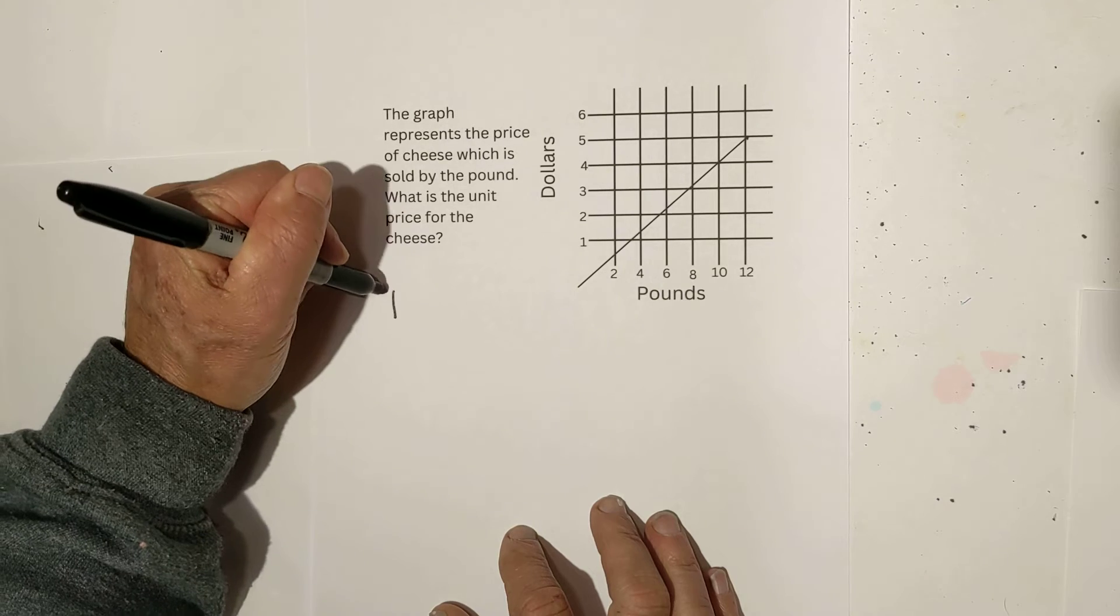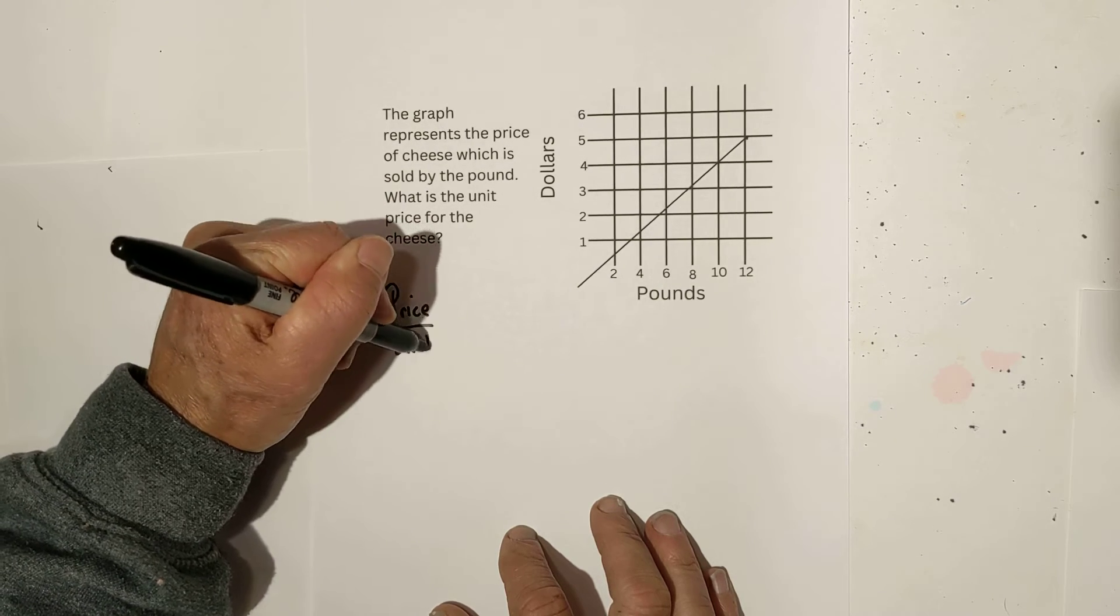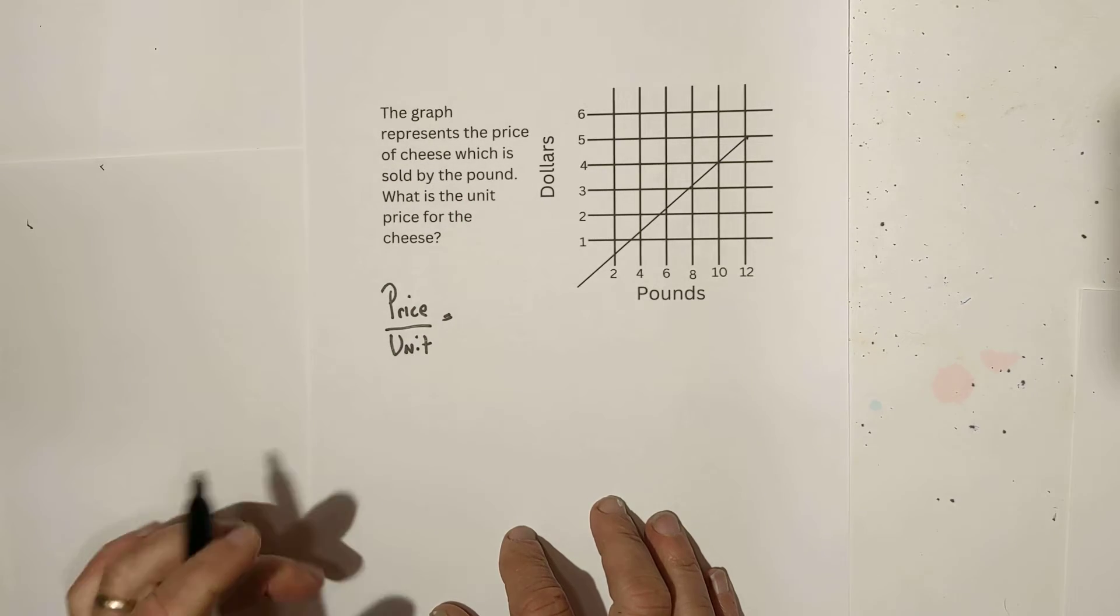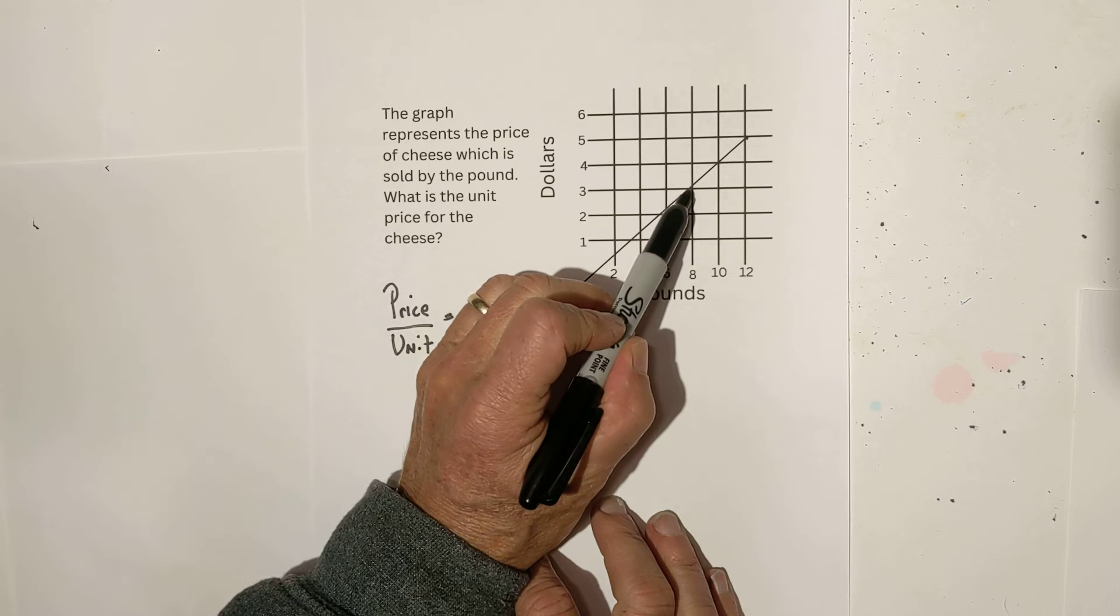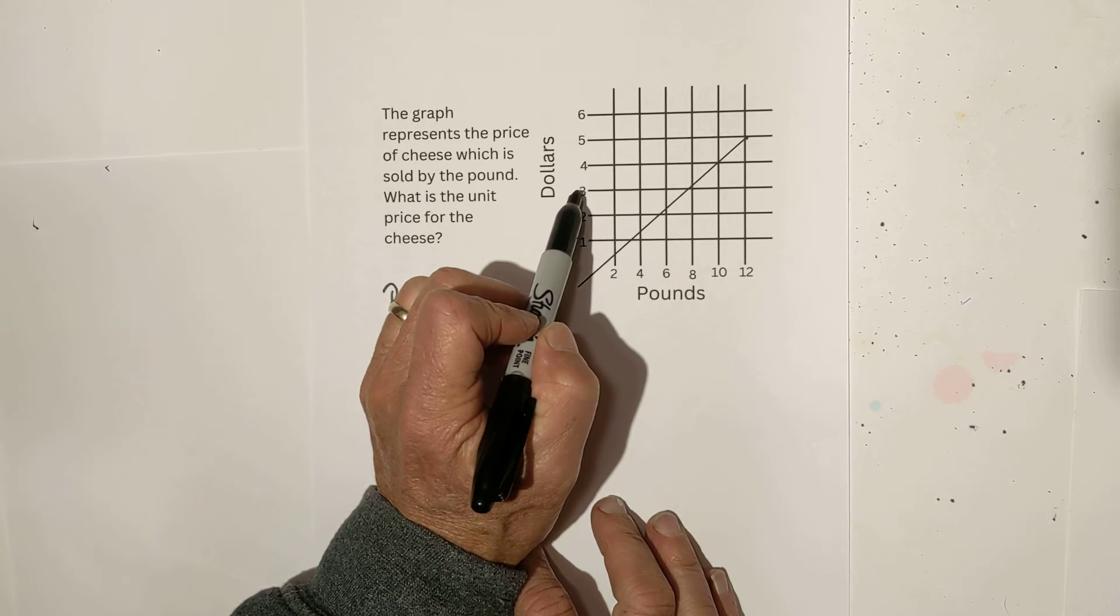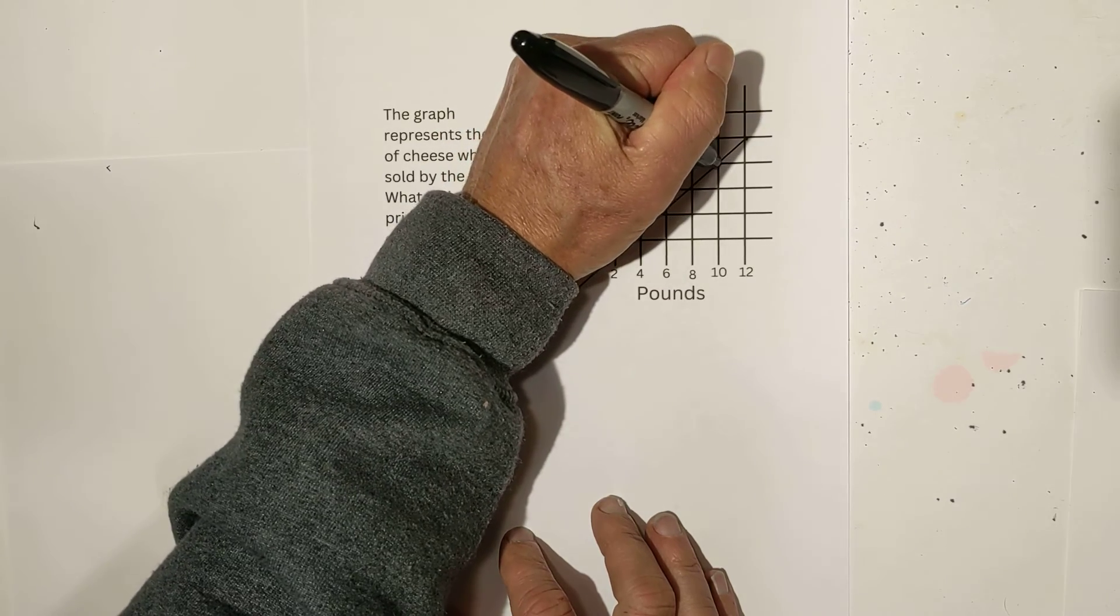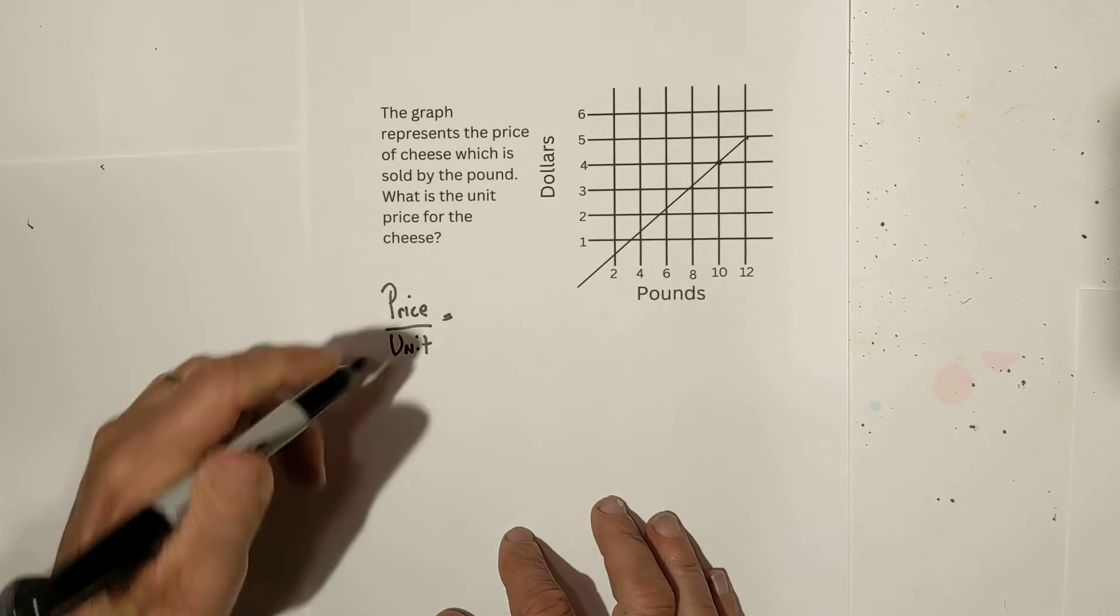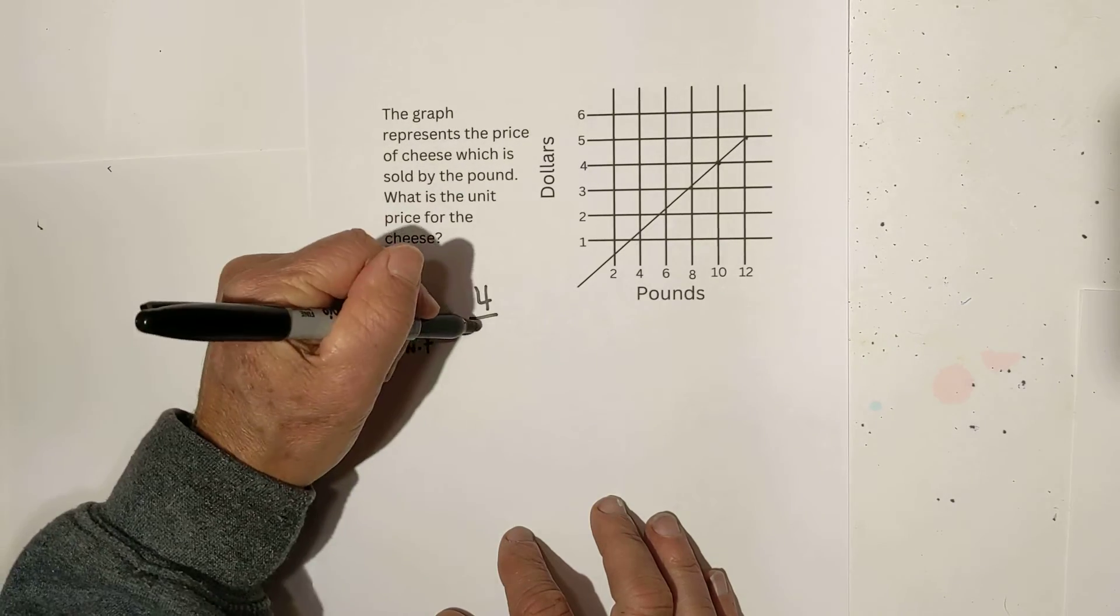Remember again, it is price over the unit. And in this example, we're going to look for where it intersects exactly. It almost looks like it does here, but it's not exactly on the dollar, but it does at the four and the 10 right here. So again, the price is four and the unit is 10.